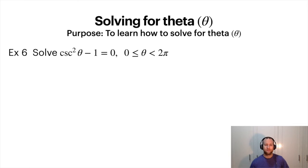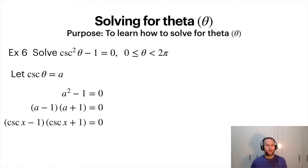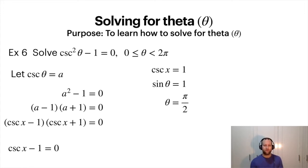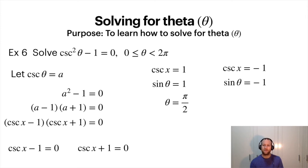Here's a difference of squares equation. Let cosecant equal a, so a squared minus 1 equals 0. Plugging cosecant back in gives two brackets. For cosecant x equals 1: substituting 1 over sine theta and solving gives sine theta equals 1, which occurs at pi over 2. Then solving the other half of the equation, substitute in and find the remaining solution. These two answers fall within the given range.